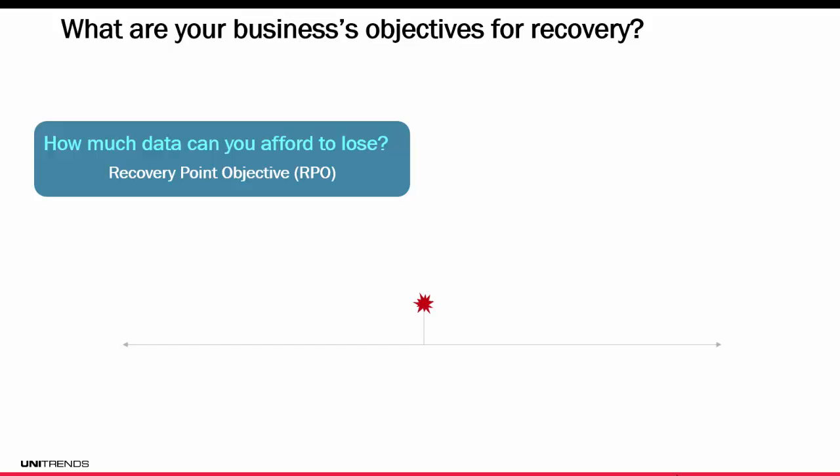Recovery comes down to two main objectives. The recovery point objective is how much data you can afford to lose. It basically means if you need to recover from a failure, how old can that data be — how much data are you willing to lose because you're recovering from a certain backup? That data loss tolerance can be anywhere from one hour, four hours, eight hours, 24 hours, a week, or a month. You determine based on each system or your entire environment what makes the most sense. That setup is your recovery point objective — the point from which you want to be able to recover in case of a disaster.